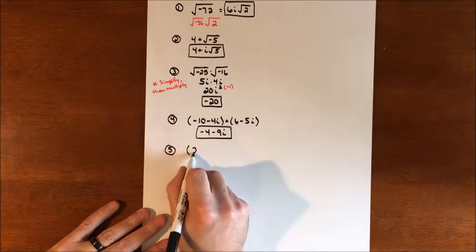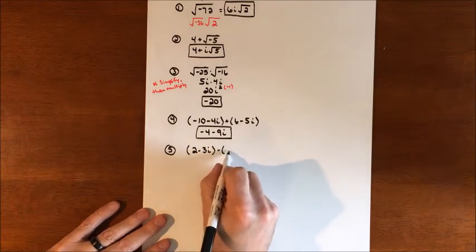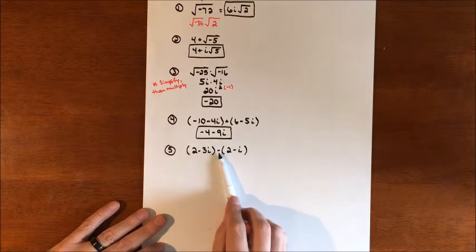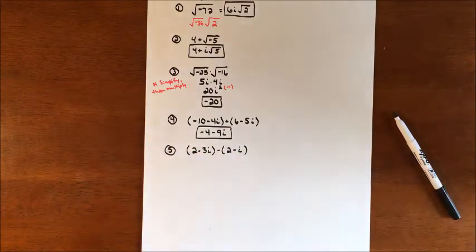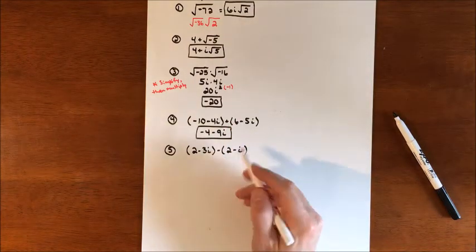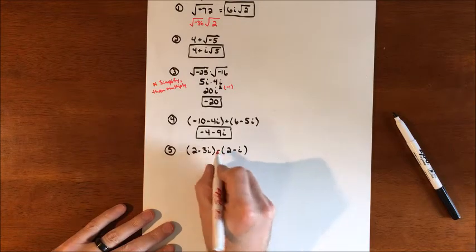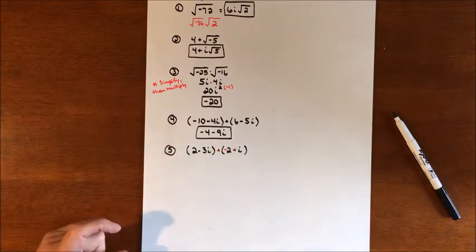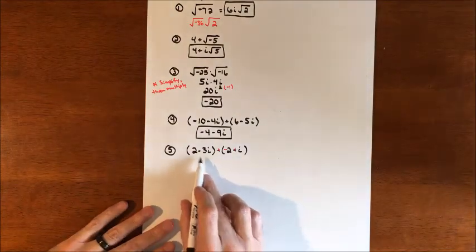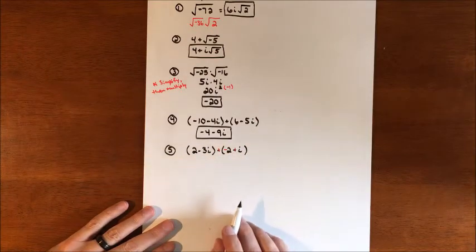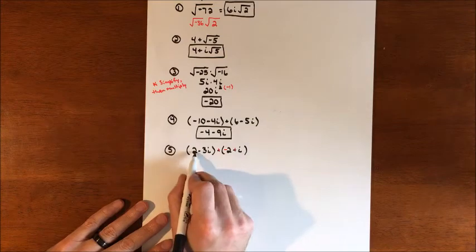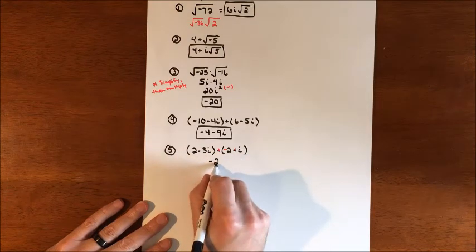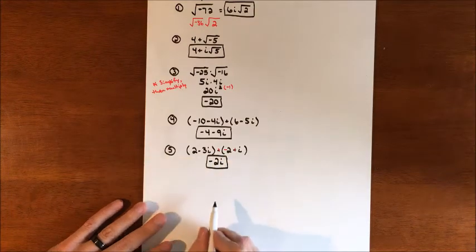For 2 minus 3i, minus the quantity 2 minus i, we're subtracting one complex number from another. I prefer to distribute the negative in to change the signs, so it becomes 2 minus 3i plus negative 2 plus i. The 2 and negative 2 cancel, and negative 3i plus i gives negative 2i. We lost our real value and are left with just an imaginary.